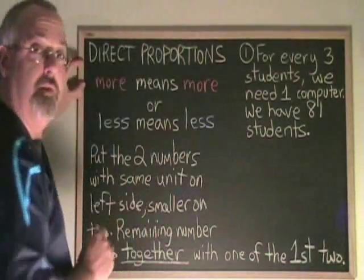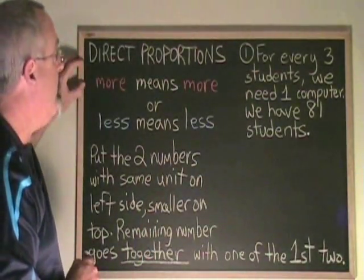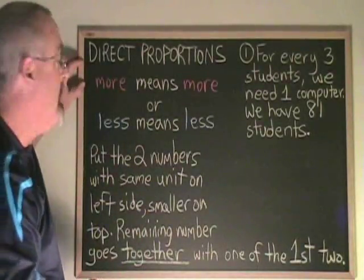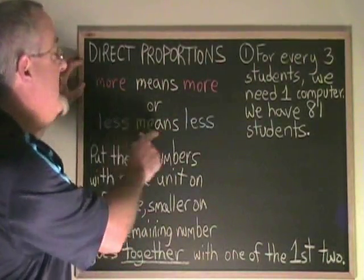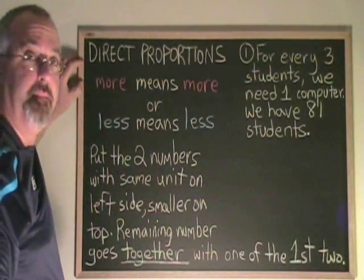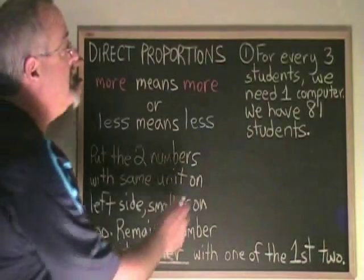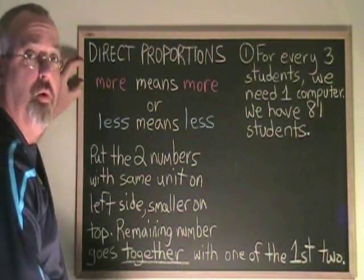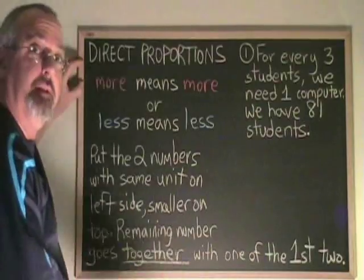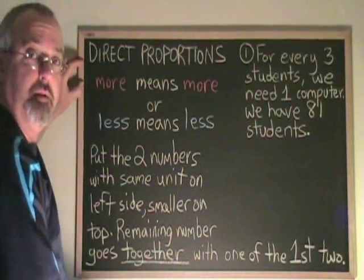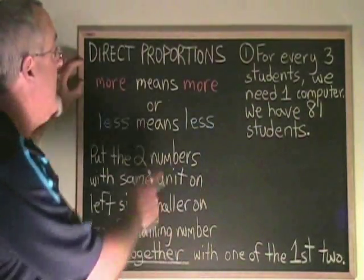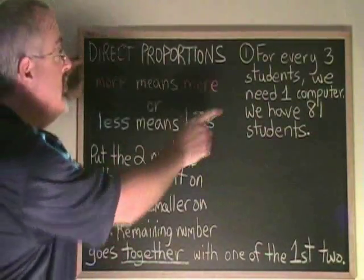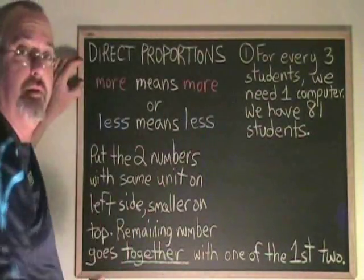This is called a direct proportion. A direct proportion is a more means more situation, or a less means less situation. In this situation, if we have more students, we will need more computers. If we have less students, we will need less computers. That means it is a direct proportion, and this is how you judge the situation and make sure that it's direct.